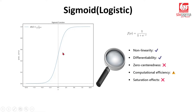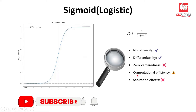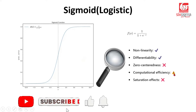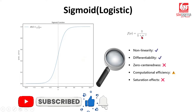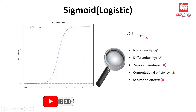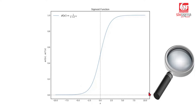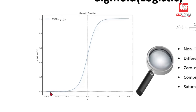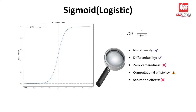Zero-centered: it is not zero-centered; it is again centered at 0.5. Computational efficiency is moderate — computationally, exponents are more expensive compared to just a constant value, so this is more expensive. Saturation effect: it scores low here because it has saturation. Beyond a point on the x-axis it'll always be flat, and so is the case for negative x-values. The derivatives will all start becoming zero beyond a point.